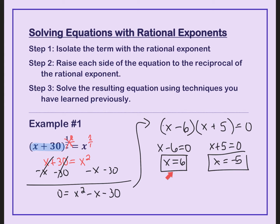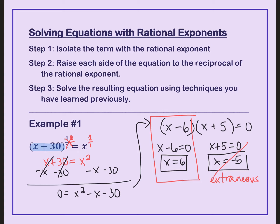Now here's the dilemma — we can actually only have one solution. Think about that one-half power. This is like the square root of this side. The square root is only going to equal the positive solution. So this problem only has x equals 6, because negative 5 is extraneous. Make sure you understand that the square root can only equal the positive solution.